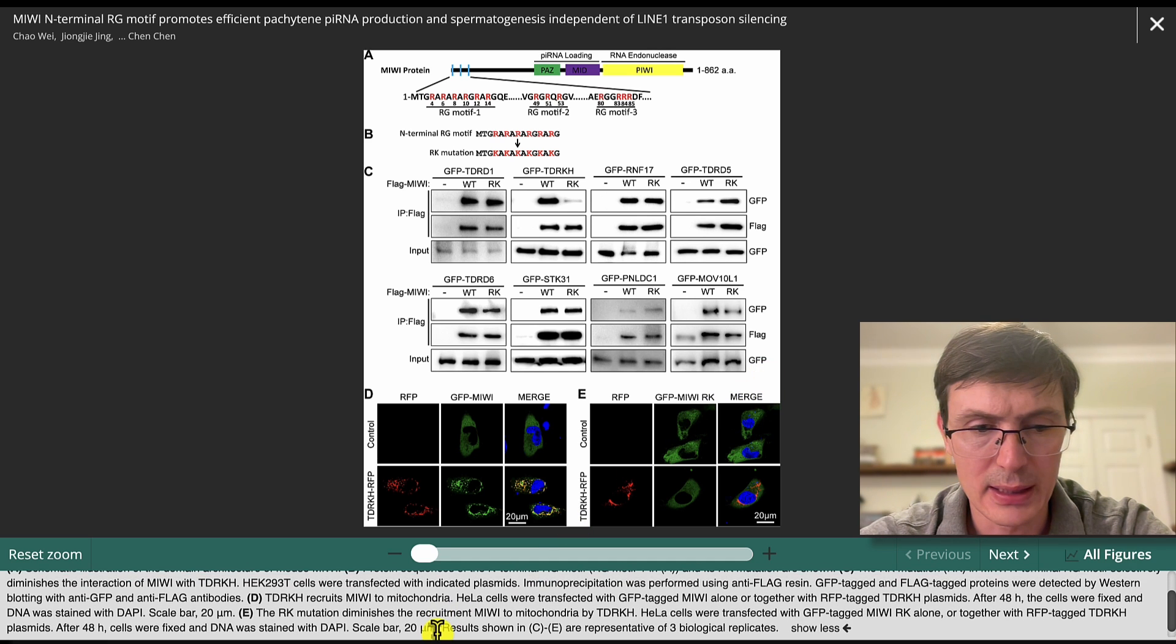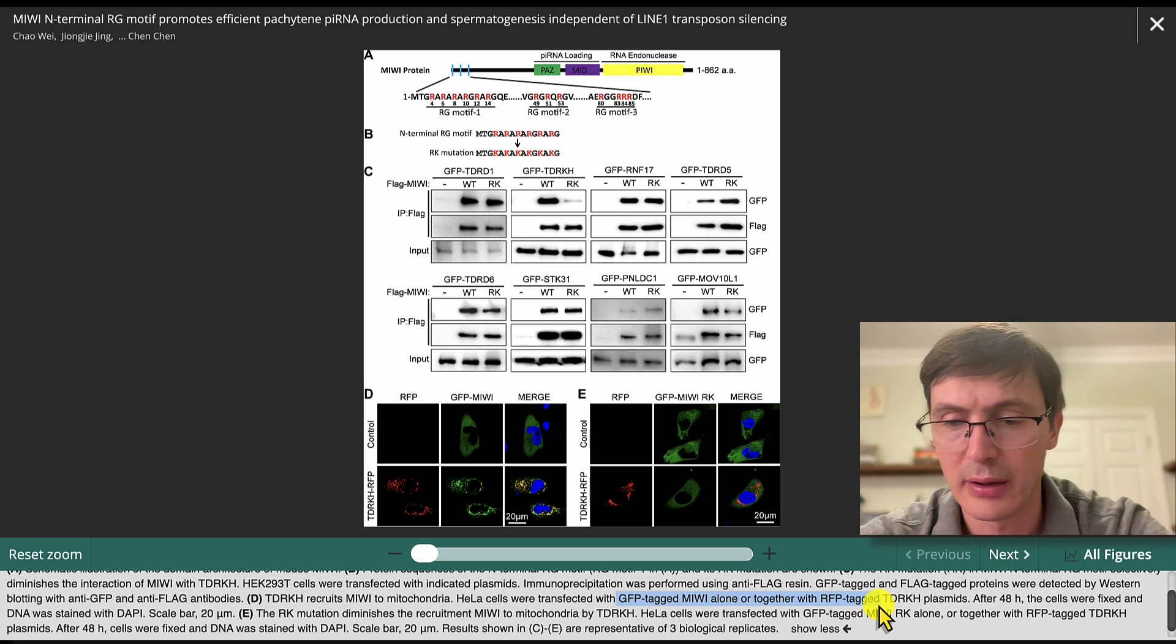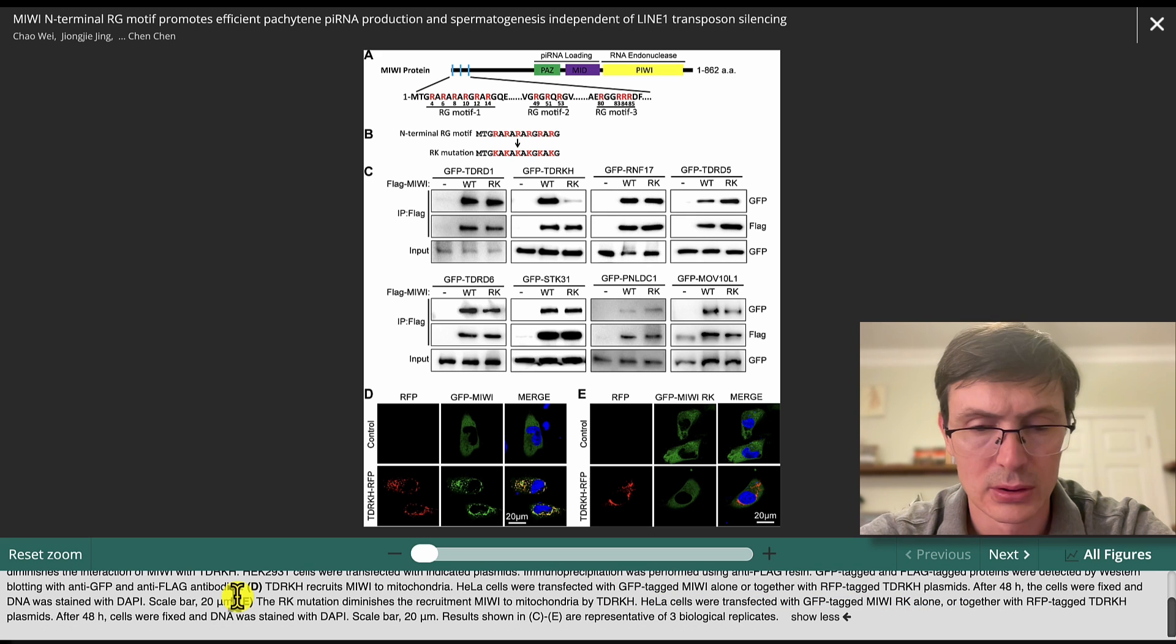And then, okay, so they move to panel D, this one here. They say the TDRK recruits MIUI to mitochondria. And then HeLa cells were transfected with GFP tagged MIUI alone or together with RFP tagged TDRK plasmid. So I think this is fine again, but they start with probably the conclusion of the figure.